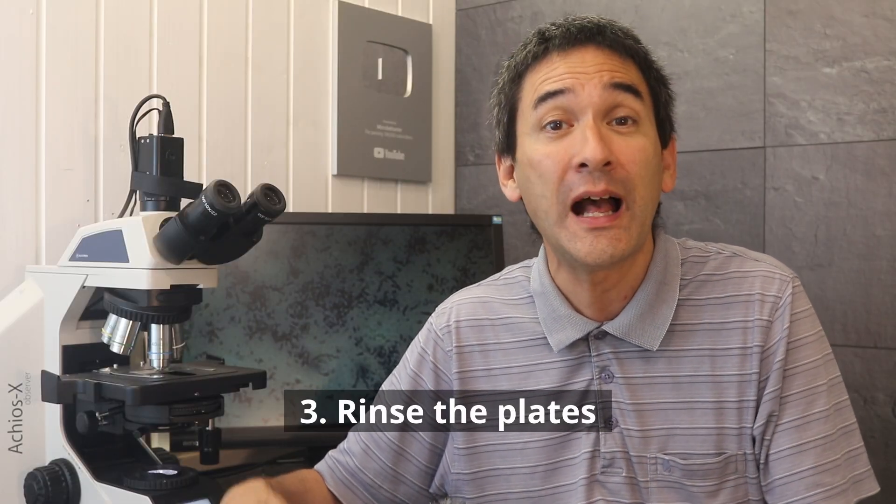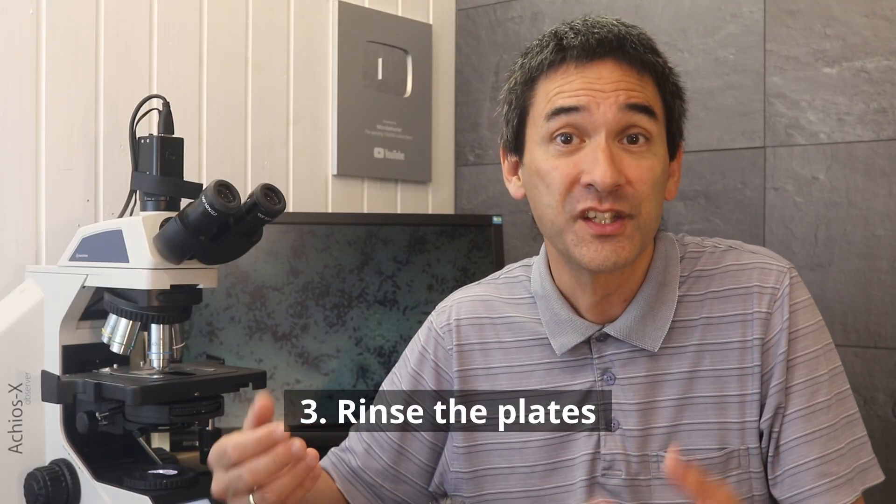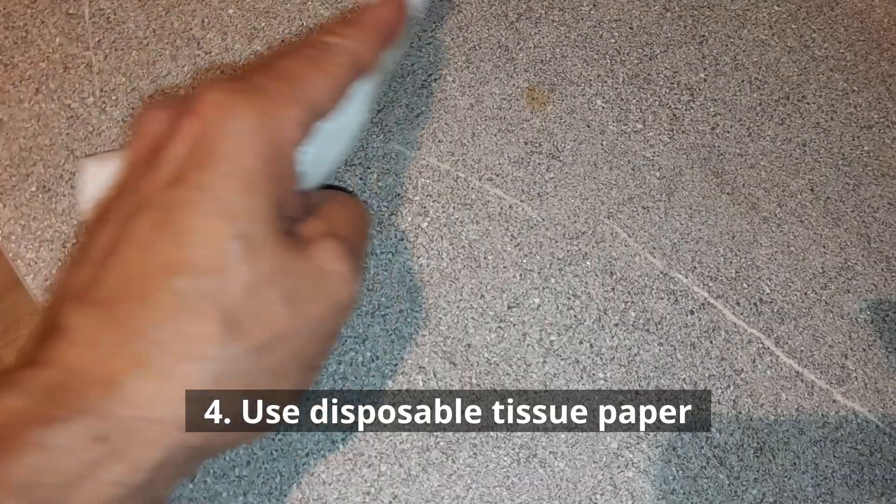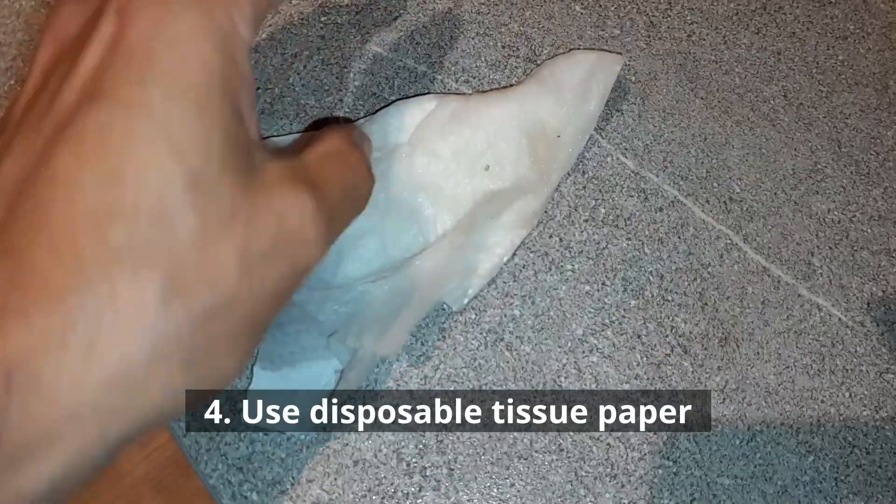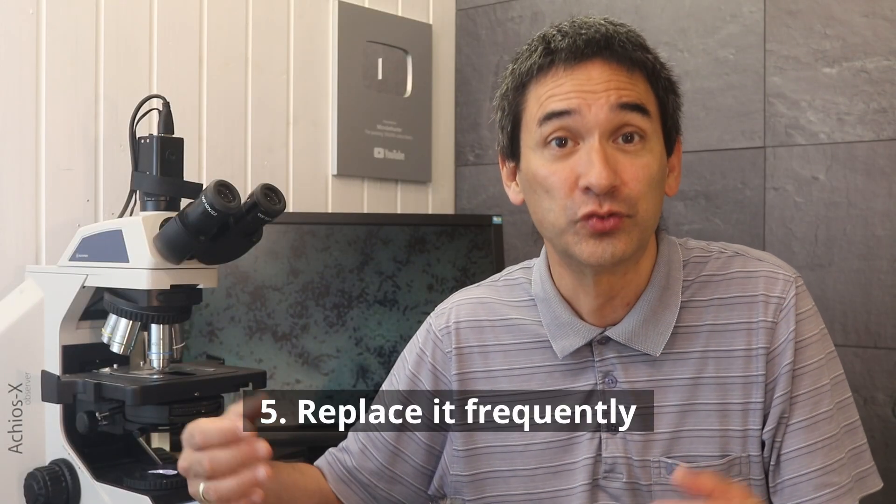Rinse the dishes in running water after you cleaned them with the sponge. And use also disposable paper towels for raw meat juices. So you want to also exchange the sponge regularly, of course.